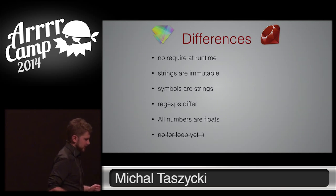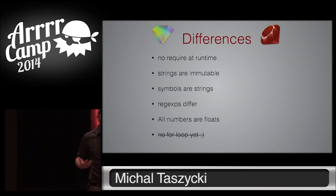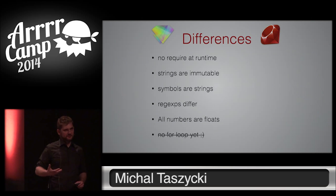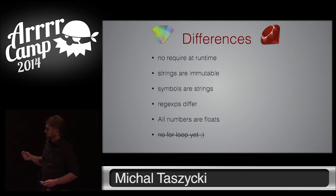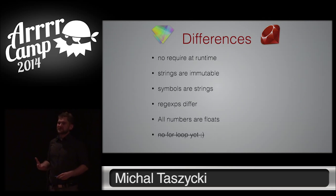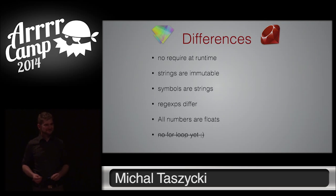Then there is Opal RB. This basically works in a browser and it compiles to JavaScript. So, requiring files also doesn't make any sense. Every require statement is translated into a sprockets directive if you use it in Rails. Strings are like in JavaScript — immutable. Symbols are strings, unfortunately, because the focus was on the performance of the language and there was no better way to implement symbols in JavaScript. Regular expressions are implemented as JavaScript regular expressions, which are different from Ruby. And all numbers are floats.